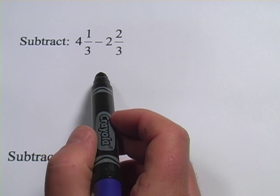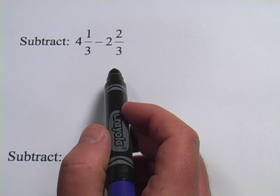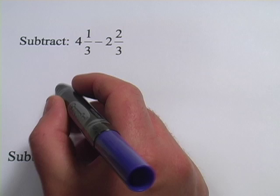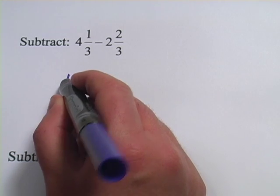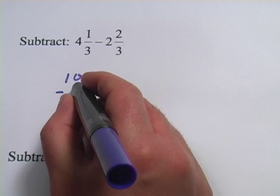In these problems we're subtracting some mixed numbers and they want us to use a technique called regrouping. If you're familiar with just normal subtraction, you'll know that sometimes, let's say we have 100 minus 99.